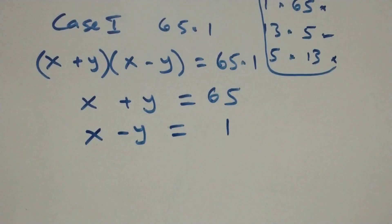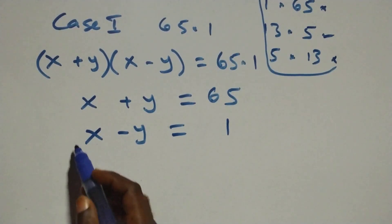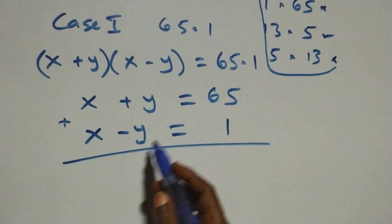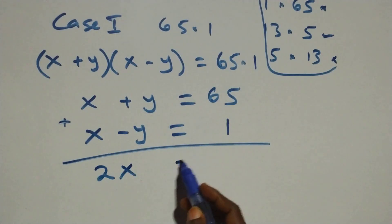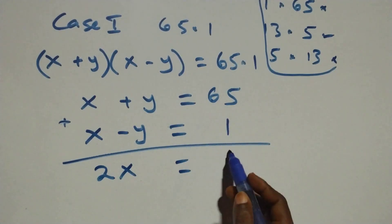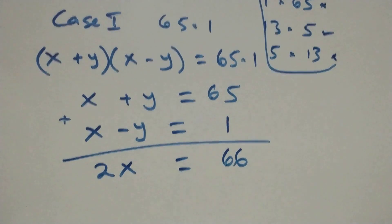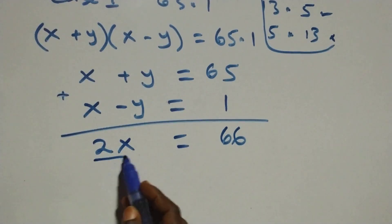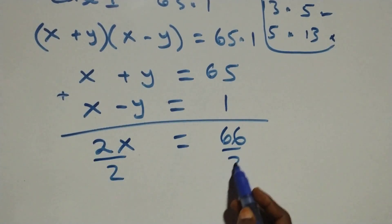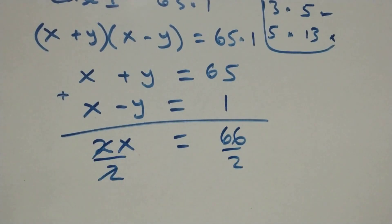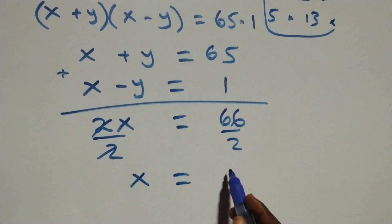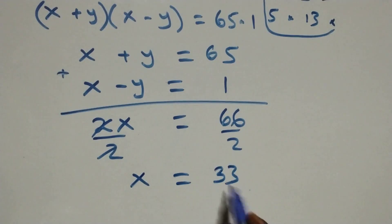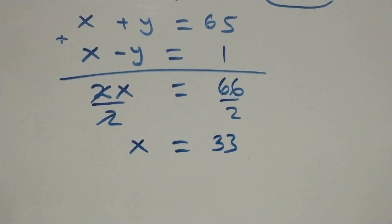We solve these two equations simultaneously. Adding them eliminates y, giving 2x equals 65 plus 1, which is 66. Dividing both sides by 2, we get x equals 66 over 2, which is 33.